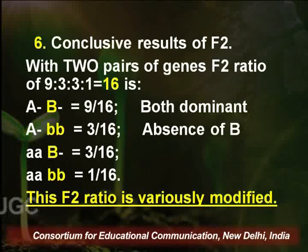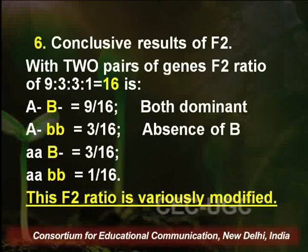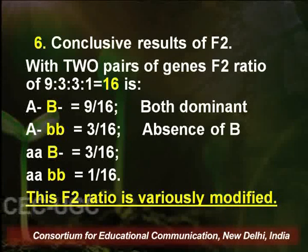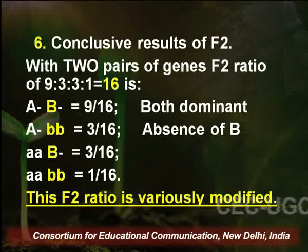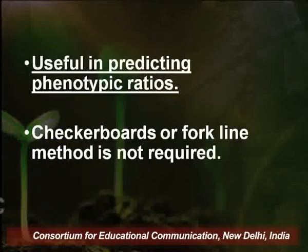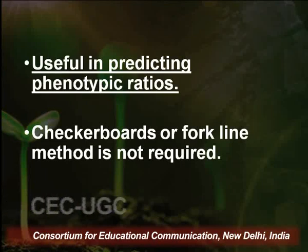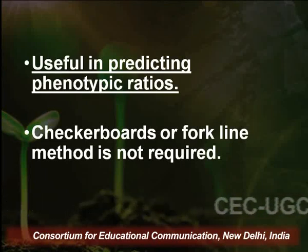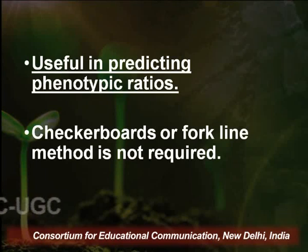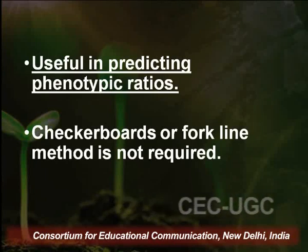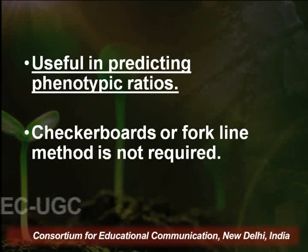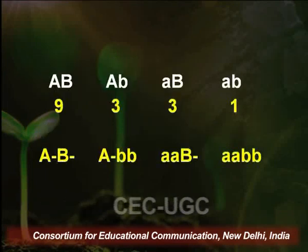If all four abbreviated genotypic ratios are interacting and one adds to another, then the F2 ratio is going to be modified and 9:3:3:1 would not be obtained — it would be a different one. This genotypic ratio is very useful in predicting phenotypic ratios, and the checkerboard or fork-line method is not required at all. If you are in a hurry, you can always reach a conclusion within a minute as to what the genotypes and ratio would be.